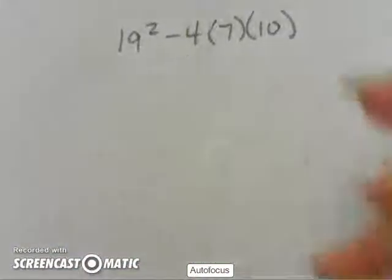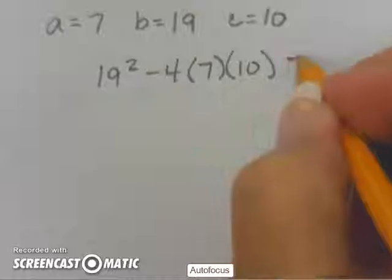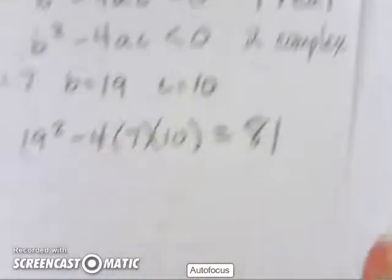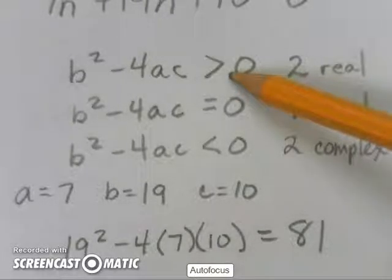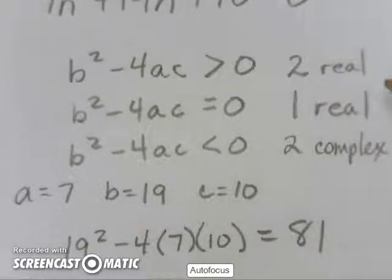So, this value is 81. Since I get 81, that's obviously greater than zero. This means I have two real solutions.